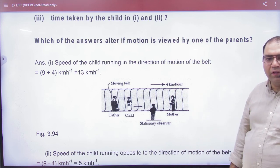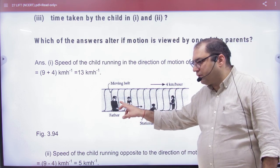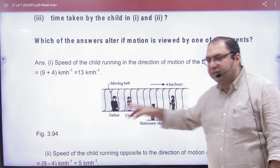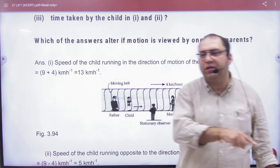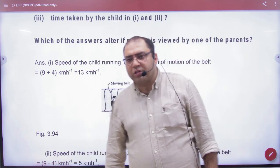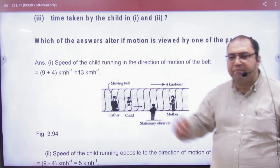With a speed of 4. What does this child do? Father to mother, mother to father, father to mother, starts playing. So when this is going with father and mother, this will go along with the belt.